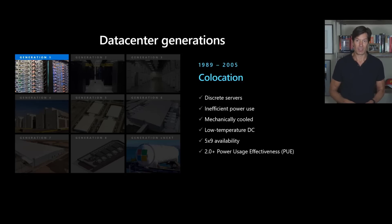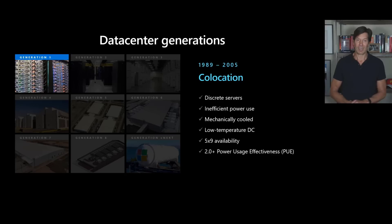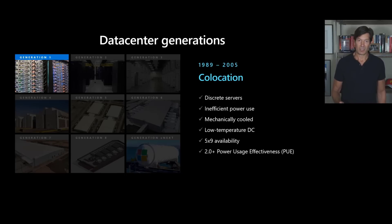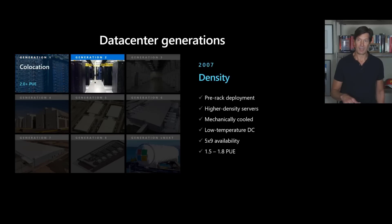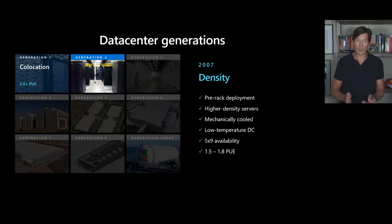In the mid-aughts, Microsoft started to get into cloud services, so a focus was made on how we could be more efficient deploying large-scale services. In our generation two phase in 2007, we focused on density — configuring and provisioning racks of servers at high density and deploying those. This higher density allowed us to get the PUE down to between 1.5 and 1.8.